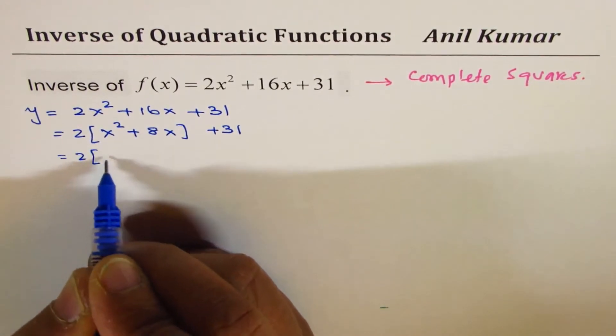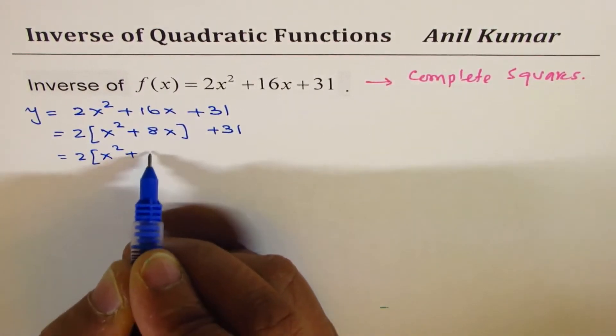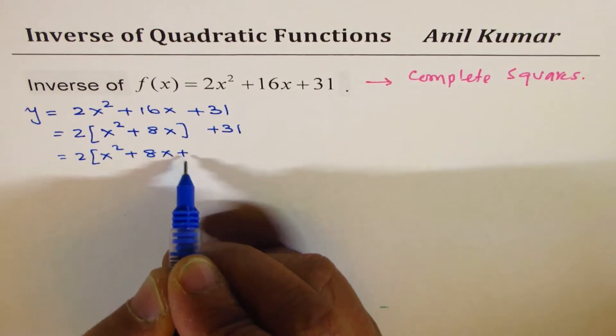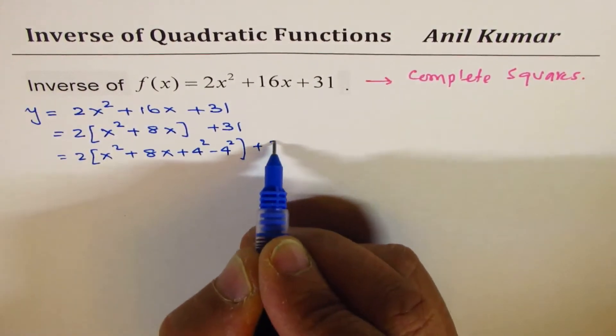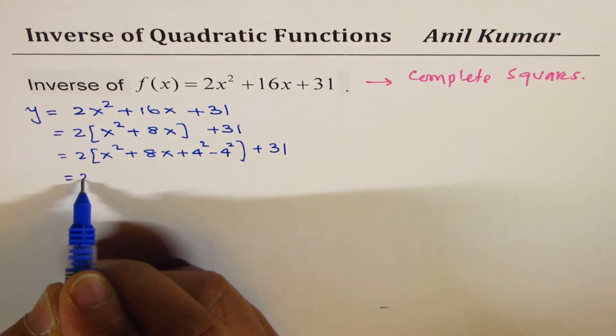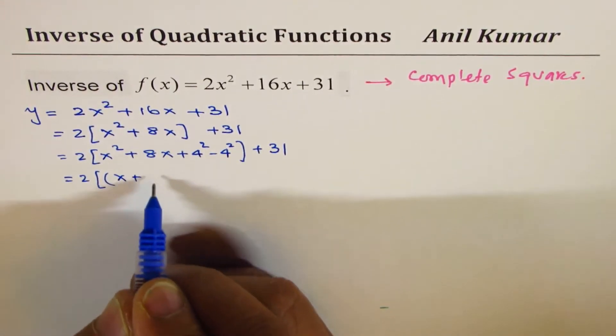Now, half of 8 is 4. So, we'll add and subtract 4 squared. That is the step for completing the squares. The first three terms form a perfect square.